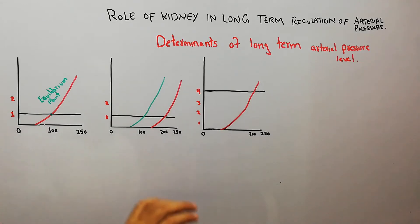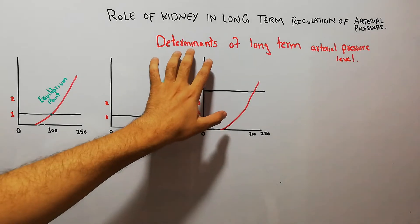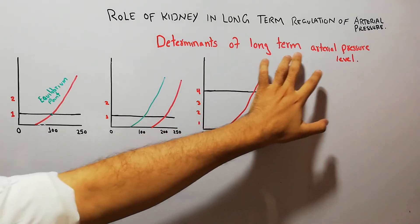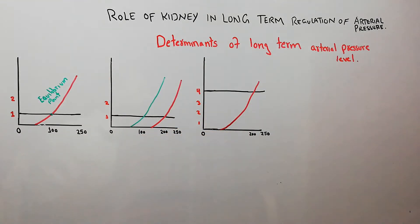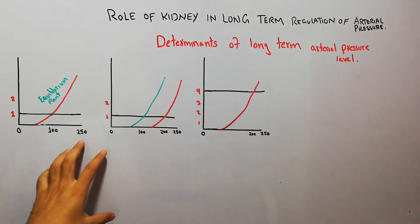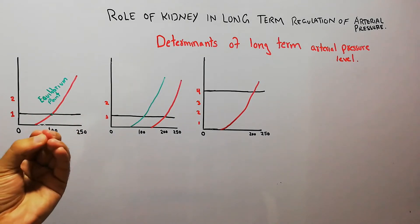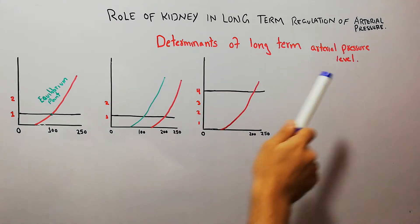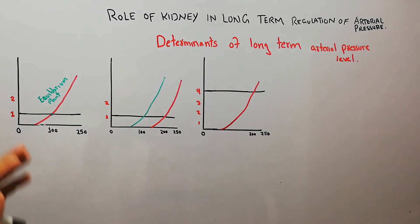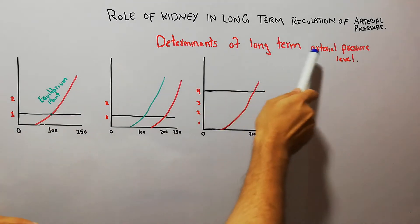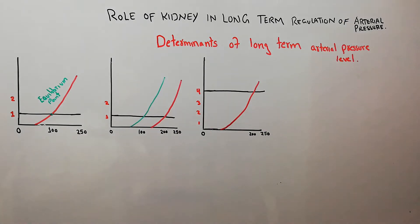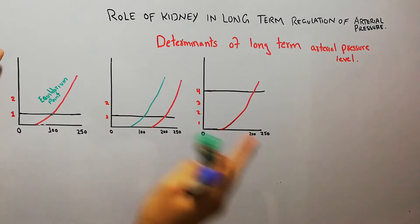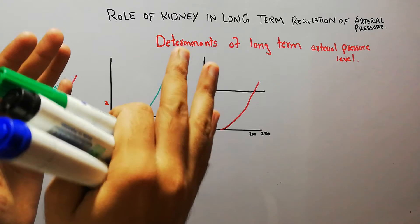Today in this lecture we are going to discuss the determinants of long-term arterial pressure level — what are the factors which basically determine the long-term arterial pressure level, and whether the arterial pressure is going to be high, normal, or low.